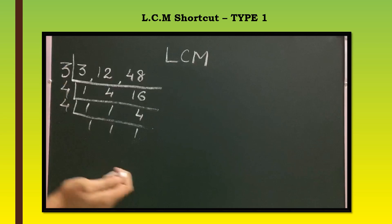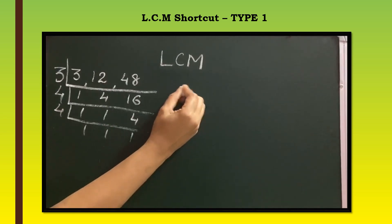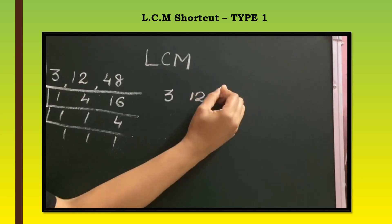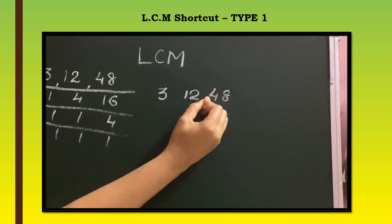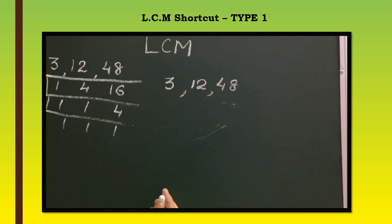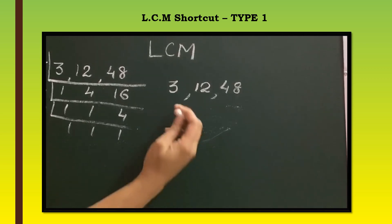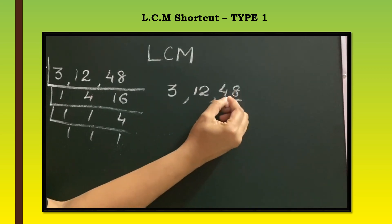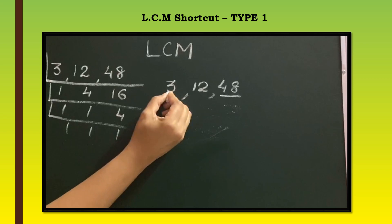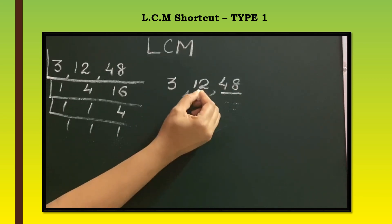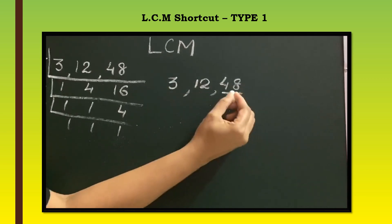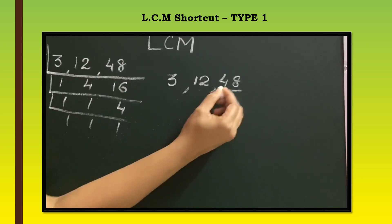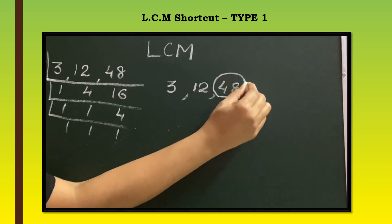Instead of doing this L method, we can use a shortcut to find the LCM. If the numbers are like this, check the numbers first — these 3 numbers are connected by multiples. Here, 48 is a multiple of 3 and 48 is a multiple of 12: 3 sixteens are 48, and 12 fours are 48. So in this case, the biggest number is the LCM.